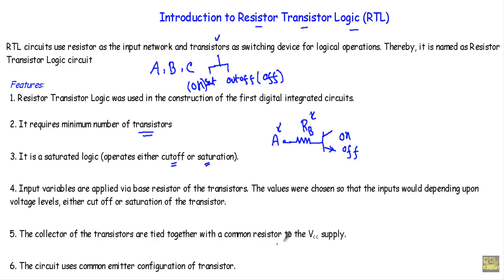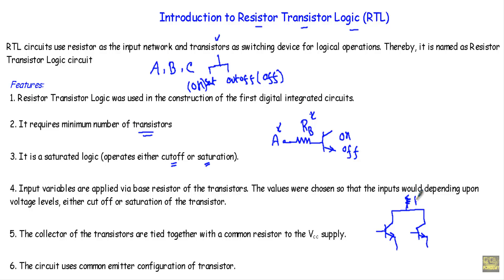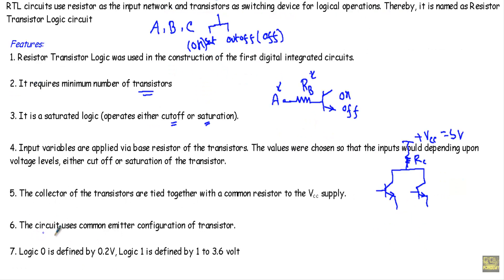For a two-input RTL logic circuit, we will use two transistors. The two collector terminals will be connected together, and we will connect this combined collector terminal with a collector load RC, which is then connected to power supply +VCC, approximately 5 volts.